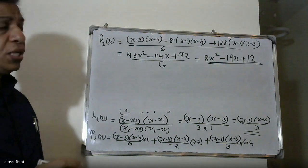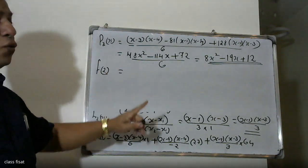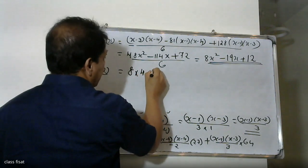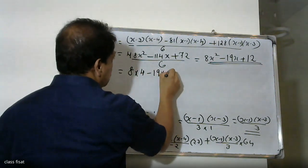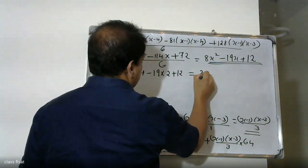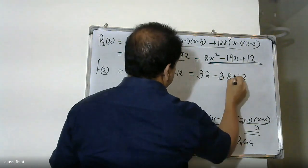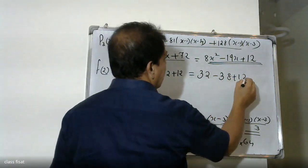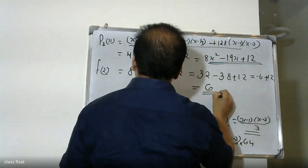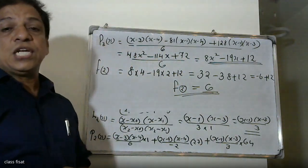Now we find f(2) by substituting x = 2 into the polynomial 8x² − 19x + 12. So f(2) = 8 times 4 minus 19 times 2 plus 12 = 32 minus 38 plus 12 = 6. Therefore f(2) = 6.